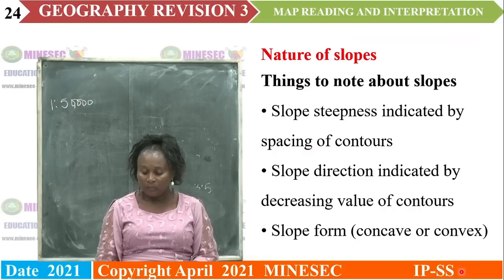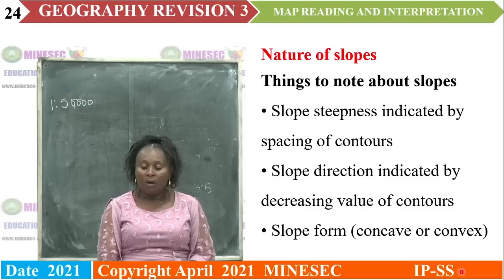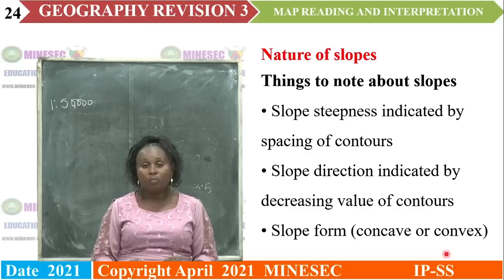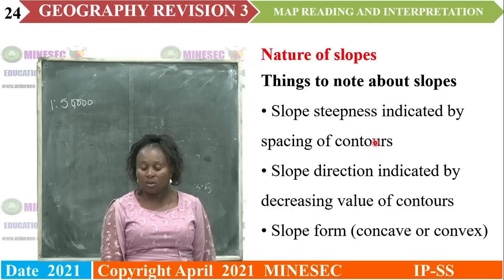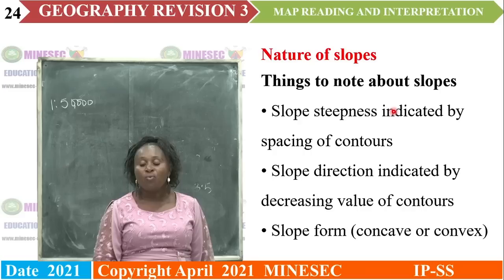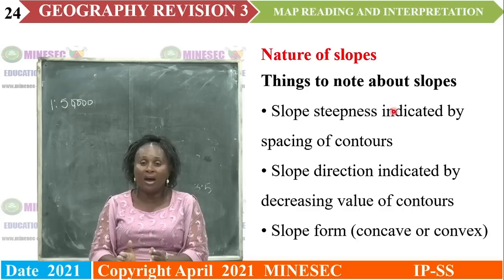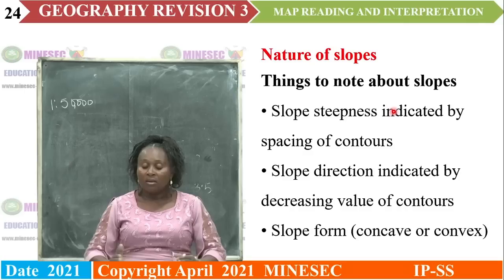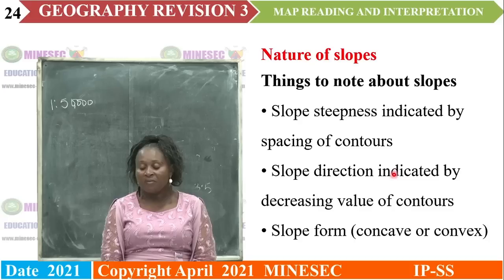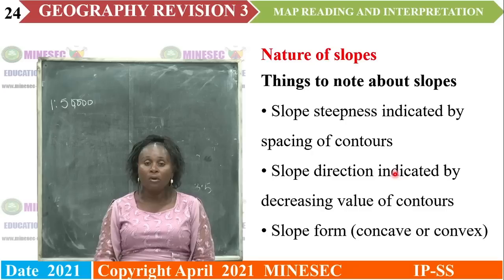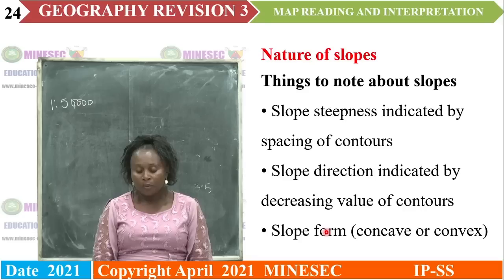We also have benchmarks, abbreviated BM, with a figure by it to say that at a specific point the height of that land is, for example, 300 meters above the sea. The next element of relief is the nature of the slope — how inclined the slope is from the horizontal. The steepness of the slope is indicated by the spacing of the contours. Where contours are closely packed it shows that the slope is steep. Where the contours are spaced out, it shows that the slope is gentle. The direction of the slope is whether it is directed to the north, to the south, up slope or down slope.